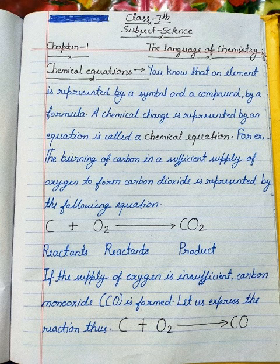When carbon and oxygen react, the product CO2 is formed. This entire reaction is represented by a chemical equation. In this equation, before the arrow, carbon and oxygen are the reactants or abhikarmak, and after the reaction, CO2 is the product.